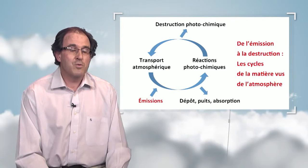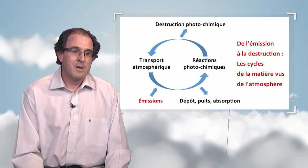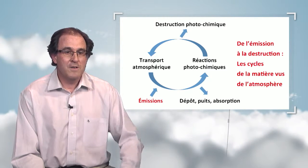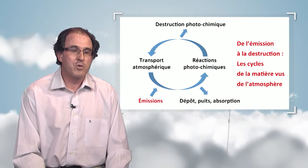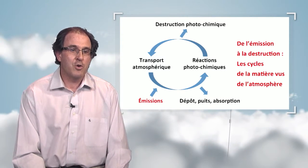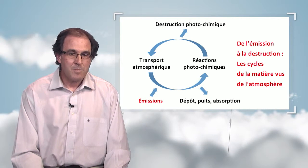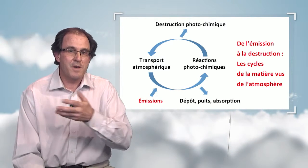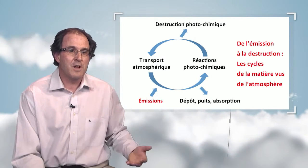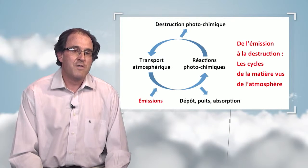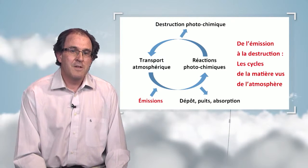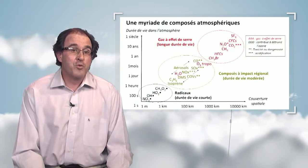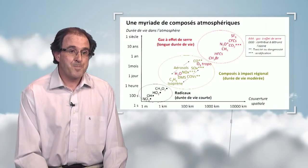In both reservoirs — the continents and the ocean — there may be a local cycle where the compound will be transformed and transported. The interactions between the atmosphere, the continental surfaces, and the ocean form biogeochemical cycles.